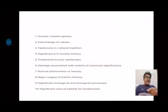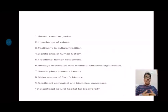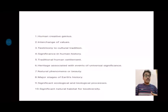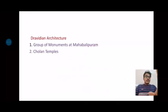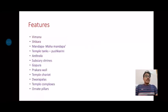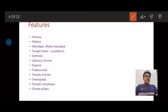These are the 10 criteria which determine whether a given site is of outstanding universal value or not. We are going to look at how these 10 criteria are applicable to the two sites we are discussing today. First we will discuss the group of monuments at Mahabalipuram, and after that the Cholan temples. But before going into those, we will first discuss the basic features of any given Dravidian temple style.